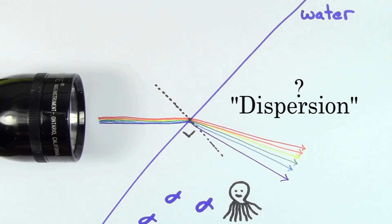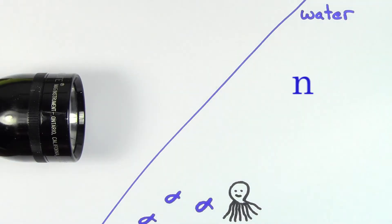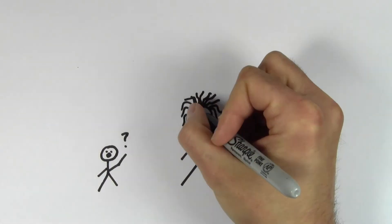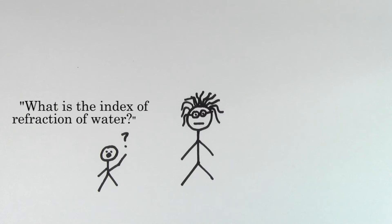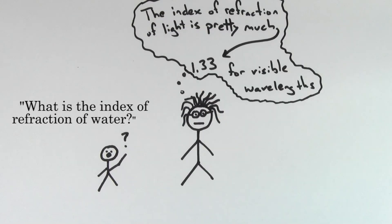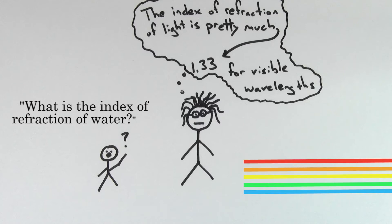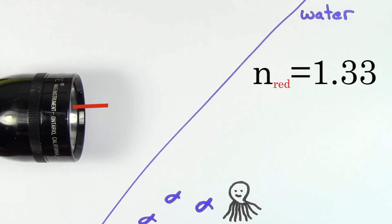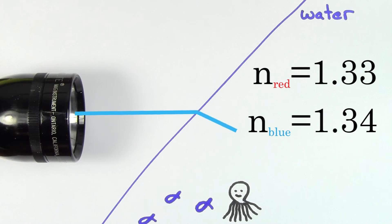So why does dispersion happen? The reason for dispersion is that the index of refraction for water and most other materials is actually a function of the wavelength of the light. For instance, most sources would say the index of refraction of water is 1.33. But what those sources really mean is that the index of refraction is pretty much 1.33 for the entire visible range of wavelengths. However, each visible wavelength has a slightly different index of refraction in water. The index of refraction of red light in water is about 1.33, but the index of refraction of blue light is closer to about 1.34.